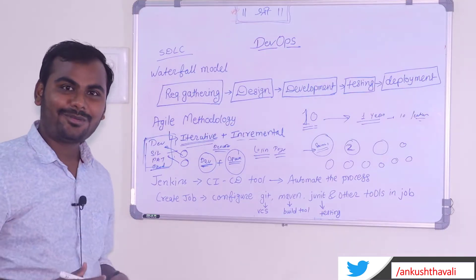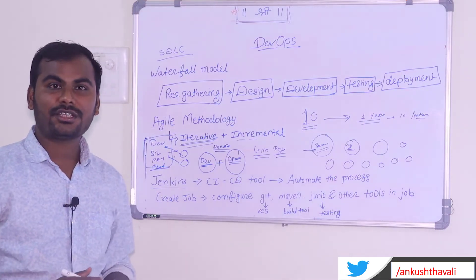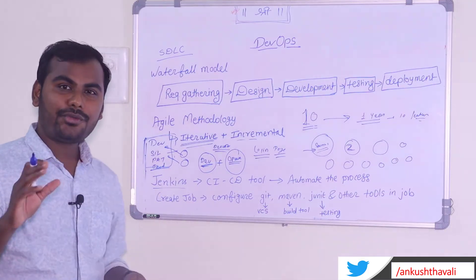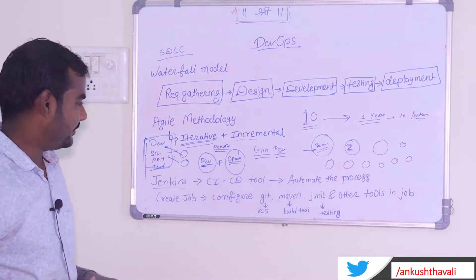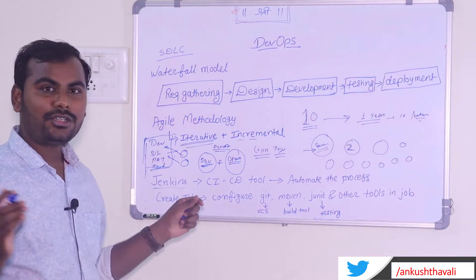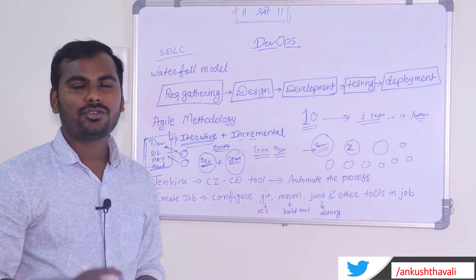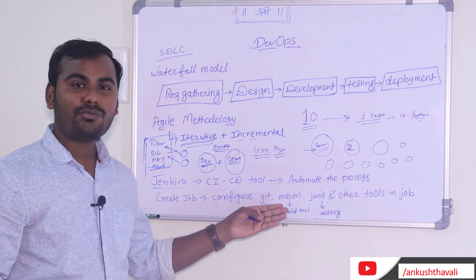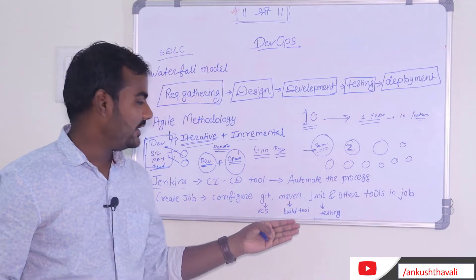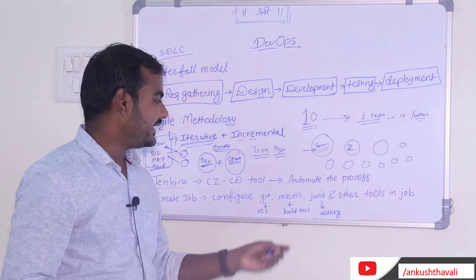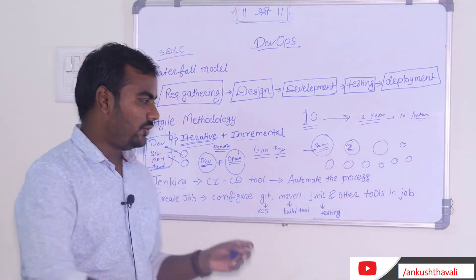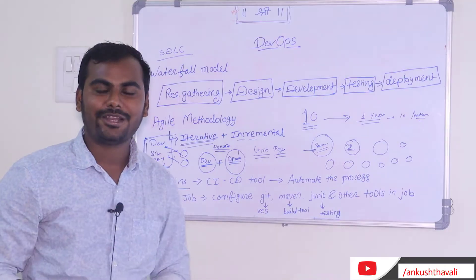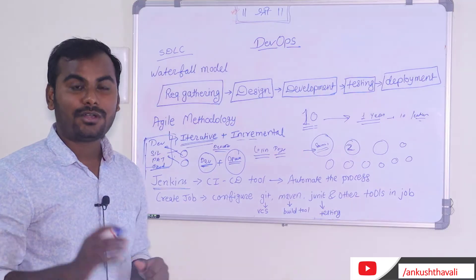DevOps overcomes the deployment problem where code works on one machine but not another. To automate the deployment process, we use Jenkins, which is an open source CI/CD tool. Inside Jenkins we create a pipeline that integrates multiple tools: Git for version control when multiple developers work on the same project, Maven as a build tool to compile the code, and JUnit along with other tools for testing.